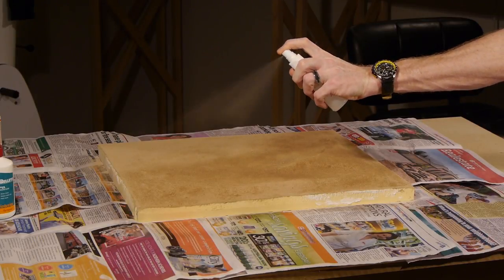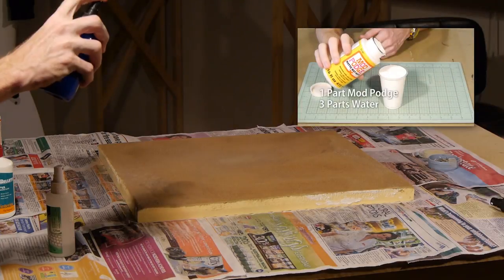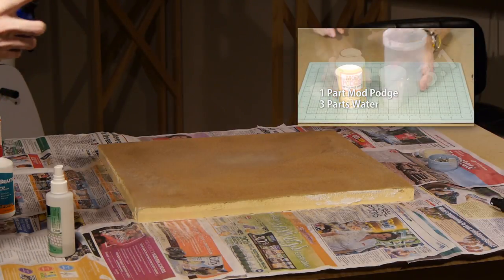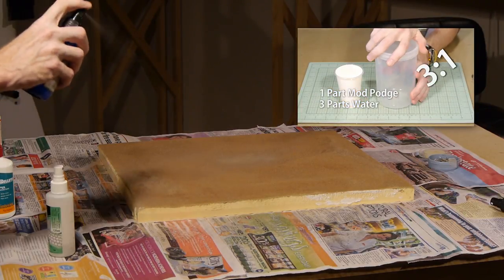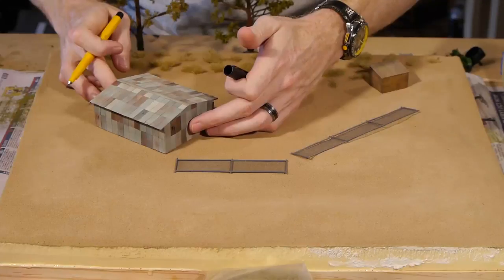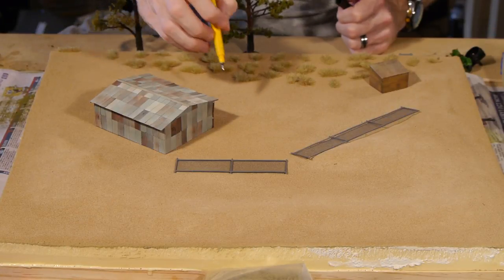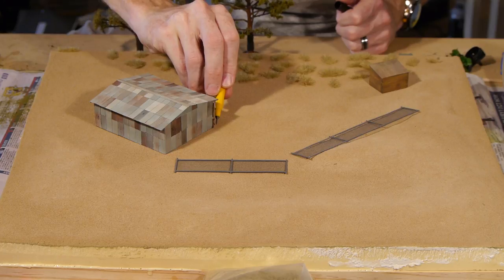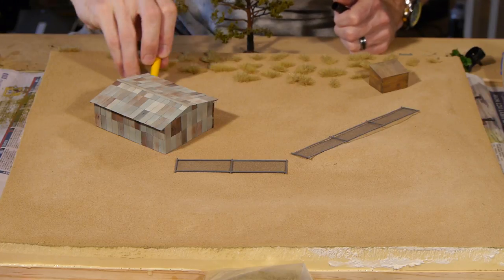However this is not enough on its own so I'll go over it with the alcohol and scenic glue to further fix it in place. Next it's a matter of placing the buildings and objects and mark out their positions so you don't apply scenery where you want buildings.